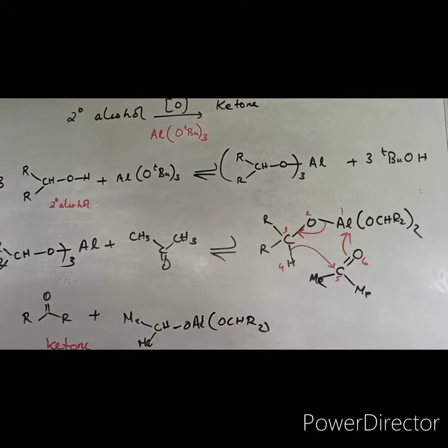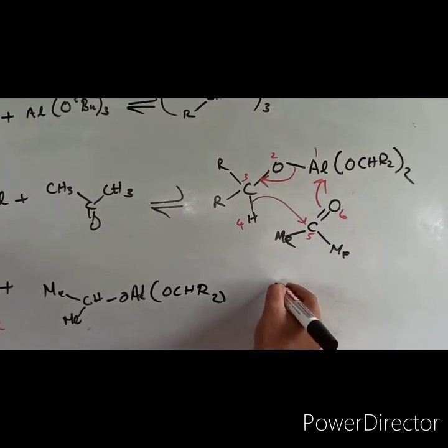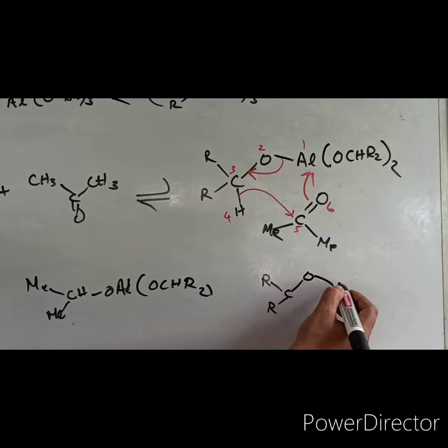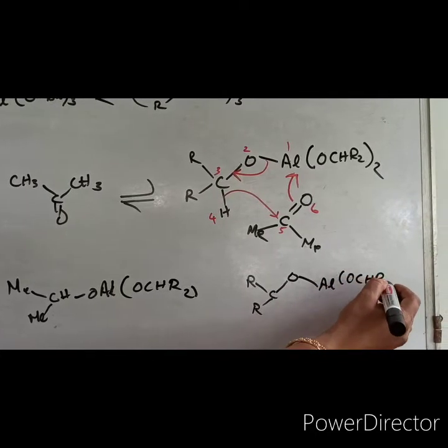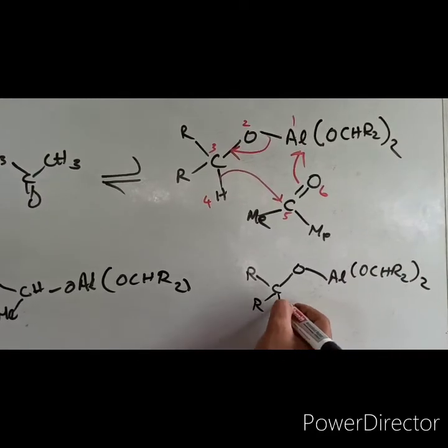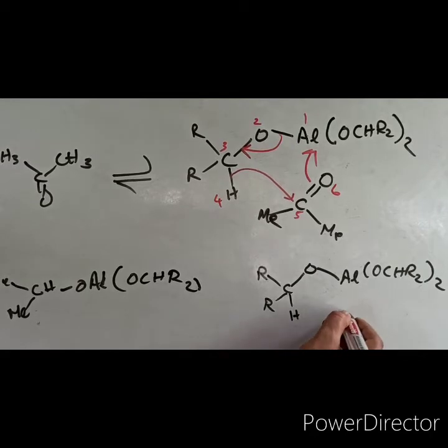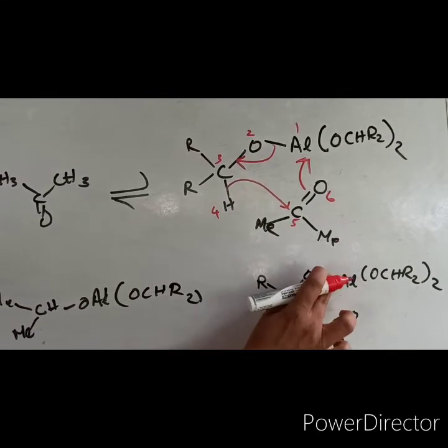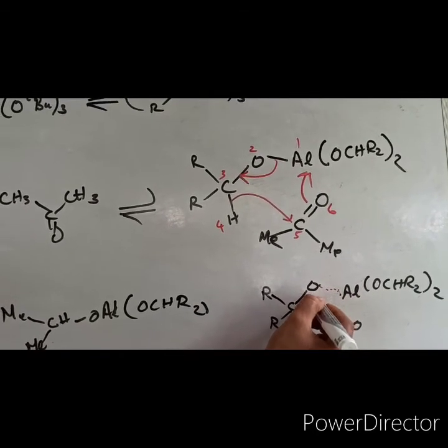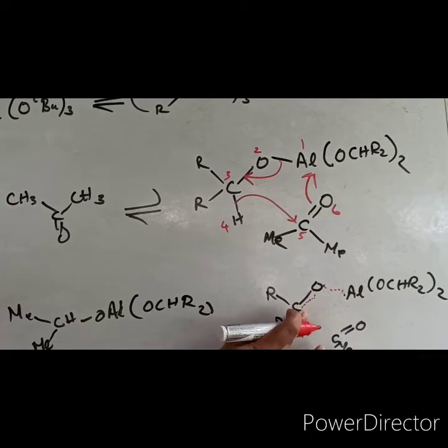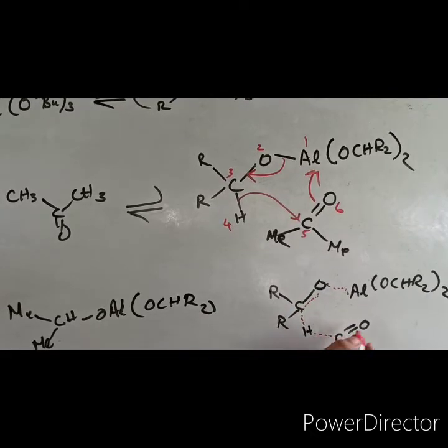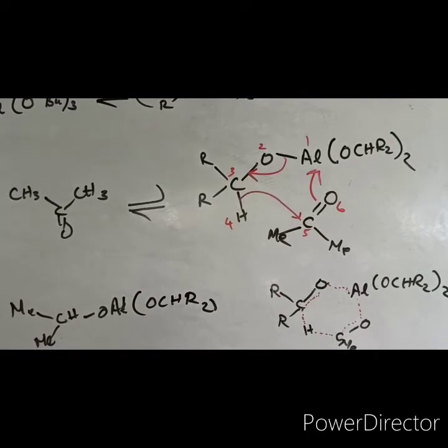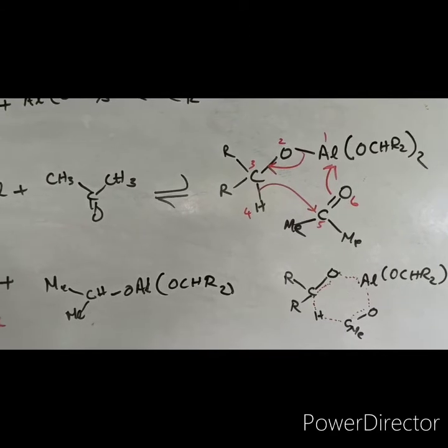If you are going to sketch the cyclic intermediate, it's R-C-R-O-Al with two O-CH-R2 groups. This will be hydrogen, then C double bond O from acetone. This bond is breaking. So this is how that oxidation is happening.